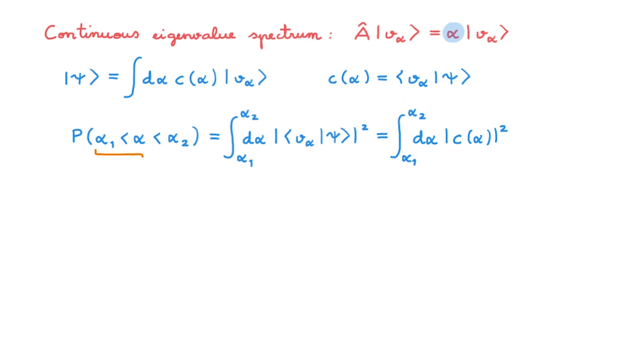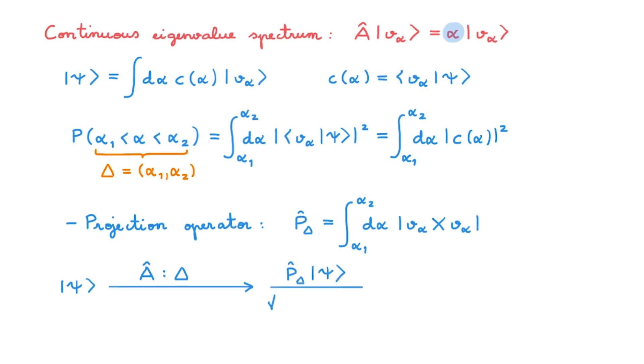Moving forward, we're going to call this interval capital delta. The next step is to define the projection operator onto this interval in the usual way for continuous variables. And taking all these updates into account, we can write that if we start with state psi, and our measurement of A-hat gives an eigenvalue in the interval alpha 1, alpha 2, then the state right after the measurement becomes this new projected state, which again we insist is normalized.